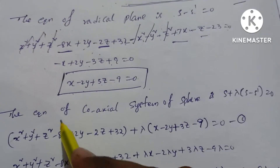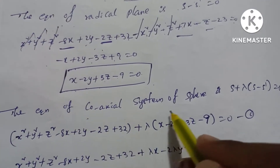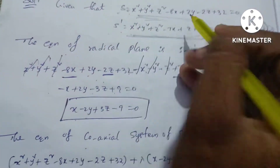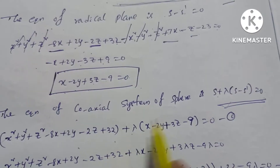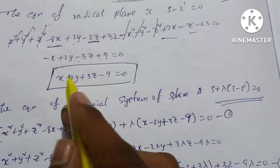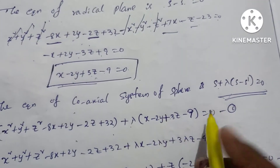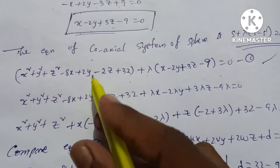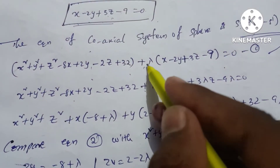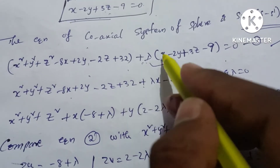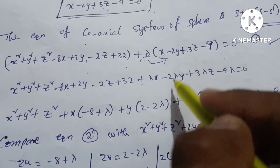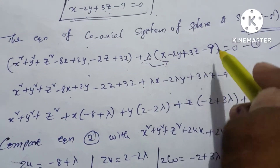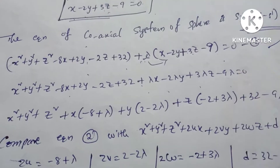The equation of the coaxial system of spheres is given by the formula S plus lambda times (S minus S dash) equal to 0. Substituting the first sphere equation S and the radical plane (S minus S dash), we get S plus lambda times (x minus 2y plus 3z minus 9) equal to 0, expanding to: S plus lambda·x minus 2·lambda·y plus 3·lambda·z minus 9·lambda equal to 0.